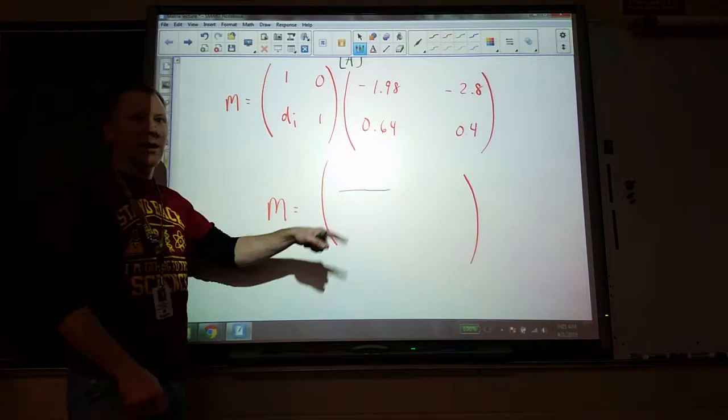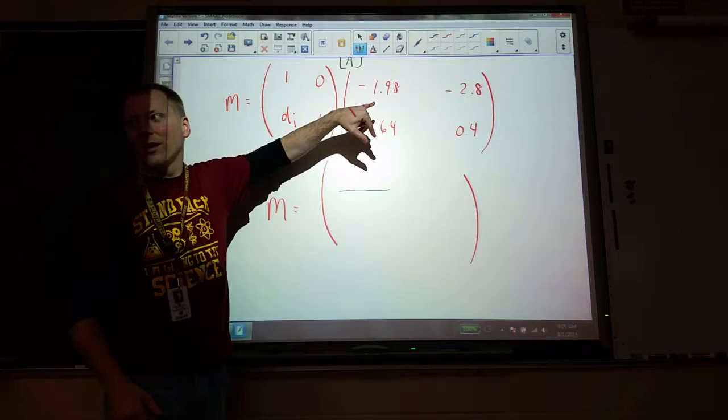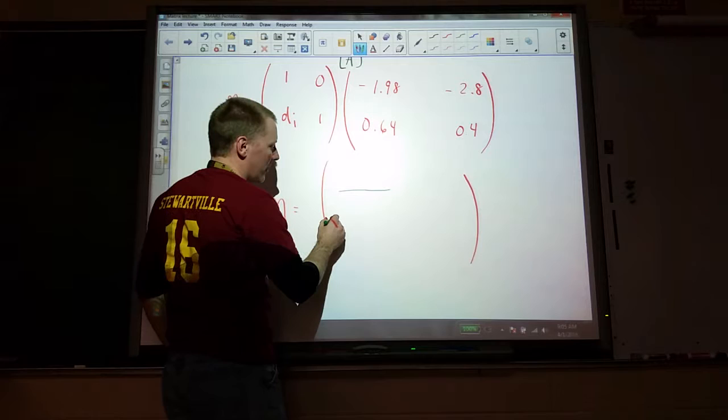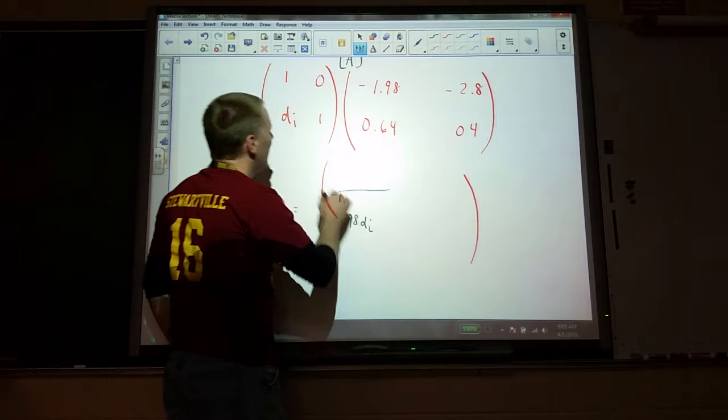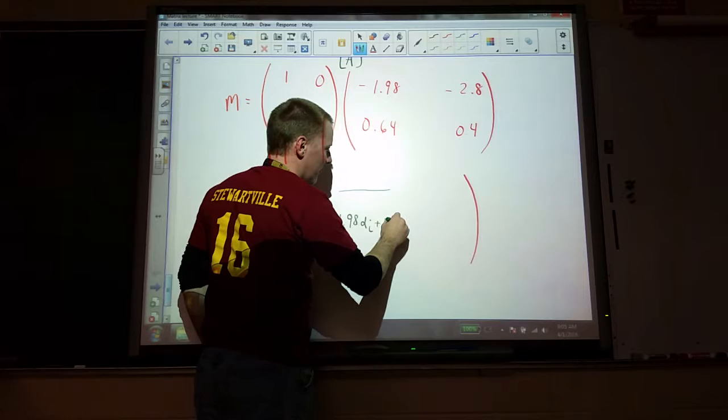So I take the upper left. When I want the lower left, I take the lower part of the first matrix, multiply it by the left column of the second matrix. So for this one, I get the DI times the negative 1.98, plus 1 times the 0.64.